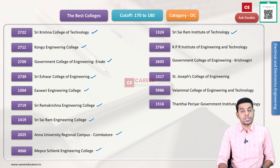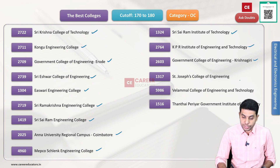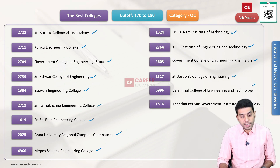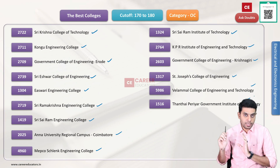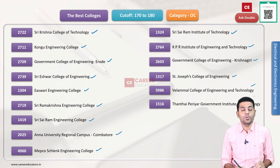Continuing OC category: 4960 Mipko Shalang Engineering College, 1324 Shree Sairam Institute of Technology, 2764 KPR Institute of Engineering and Technology, 2603 Government College of Engineering Krishnagiri, 1317 St. Joseph College of Engineering, 5986 Velammal College of Engineering and Technology, 1516 Thandai Periyar Government Institute of Technology. These are the colleges for OC category with a cut-off in the 170-180 range.